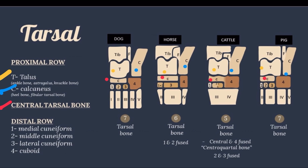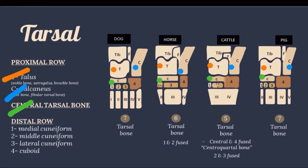The bones of the distal row are numbered 1 to 4 from medial to lateral. The first tarsal bone is the medial cuneiform, the second is the middle cuneiform, the third is the lateral cuneiform, and the fourth is the cuboid. There are seven tarsal bones in dog. In horse, there are six — the first and second tarsal bones are fused. In cattle, there are five — the central tarsal and fourth tarsal bones are fused into the central quartal bone, and the second and third tarsal bones are fused. In pig, there are seven tarsal bones.